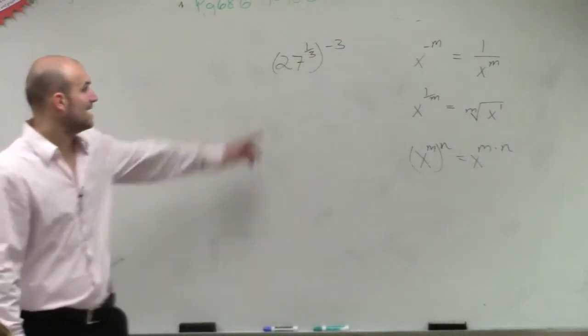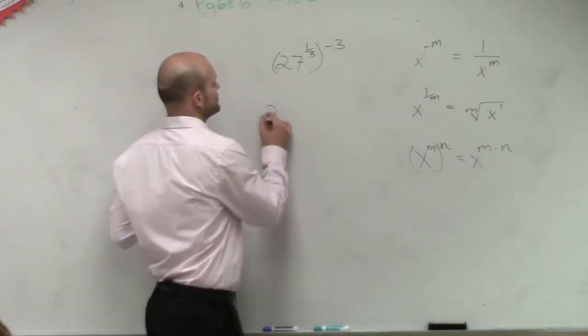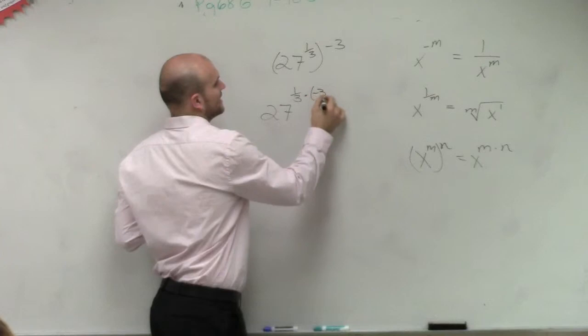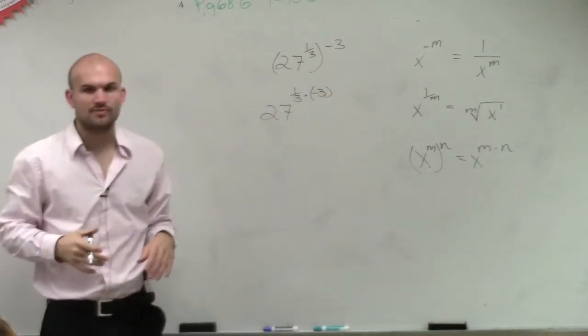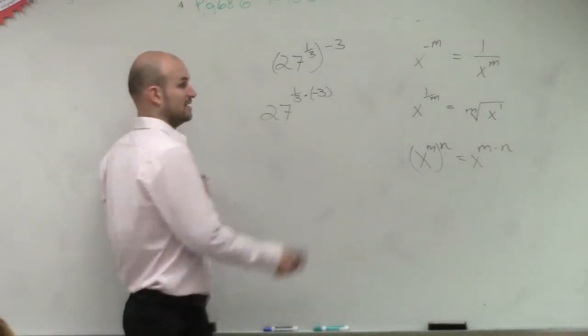So let's go through this first. I notice I have an exponent raised to another exponent, right? So I can say this is 27 to the 1/3 times negative 3. So what's 1/3 times negative 3? Negative 1.